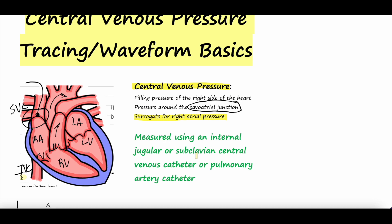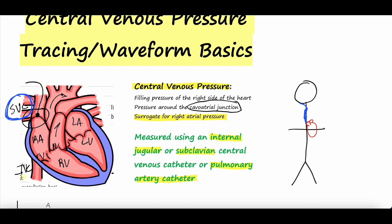To get that measurement, you need a central line in either the internal jugular vein or the subclavian vein. You can also get it off the pulmonary artery catheter. If you have a patient, we want to measure a pressure right at the cavoatrial junction. To do that, you have to have a central line going into the superior vena cava, which dumps into the right atrium. To get into that superior vena cava, you need to access it through the internal jugular vein or the subclavian vein.